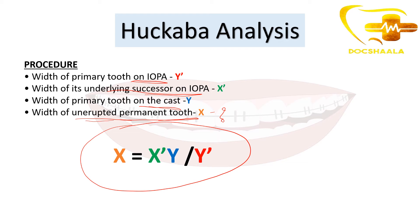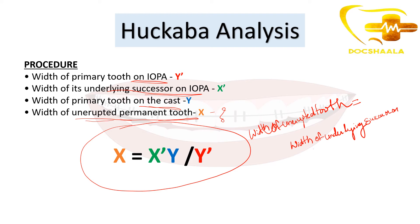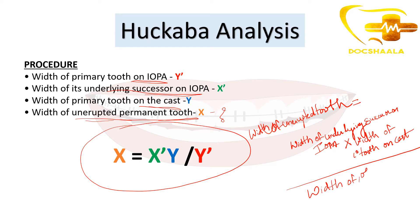So using this formula, the width of the unerupted tooth equals the width of the underlying successor on IOPA, multiplied by the width of the primary tooth on the cast, divided by the width of the primary tooth on the IOPA. This is how we measure the width of the unerupted tooth.